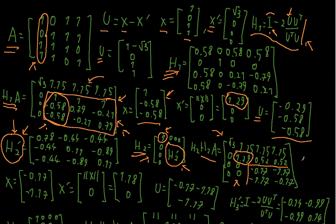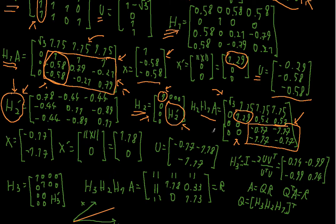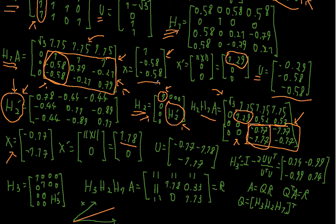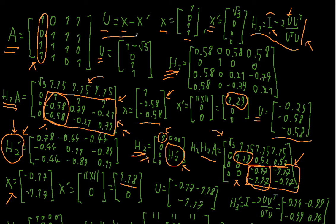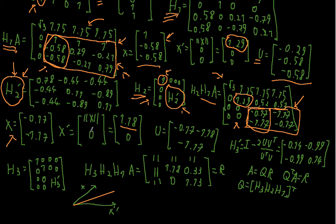Now we consider the 2×2 sub-submatrix. Its first column vector is x = (−0.17, −1.17). x prime has its first component equal to the norm of that vector — the square root of (−0.17)² + (−1.17)², which gives 1.18 — and all other components are zero. So vector u = x minus x prime = (−0.17 − 1.18, −1.17) = (−1.35, −1.17).